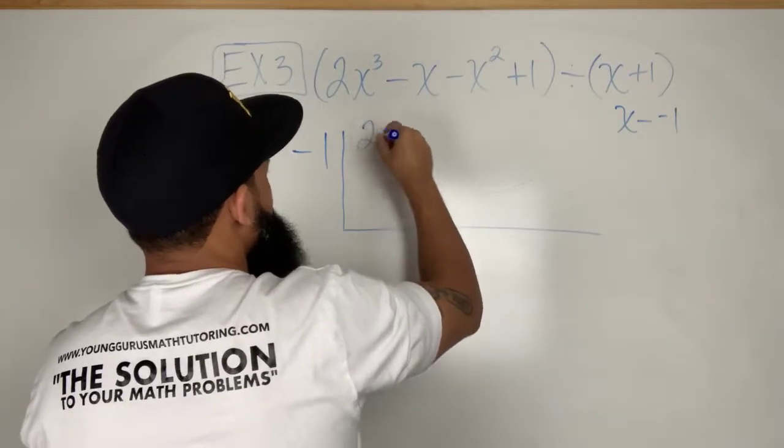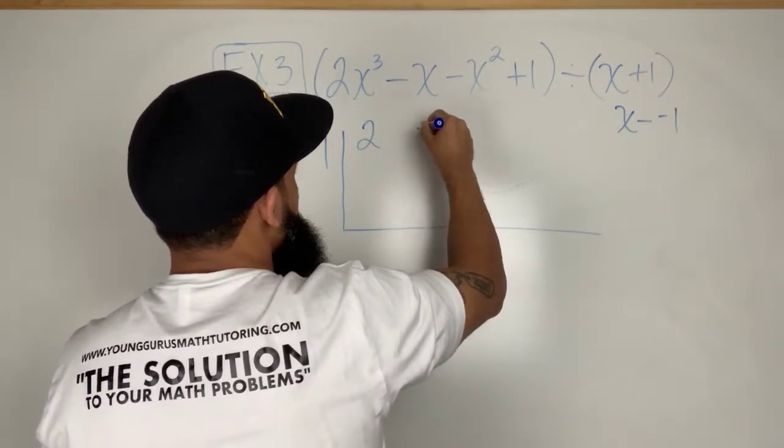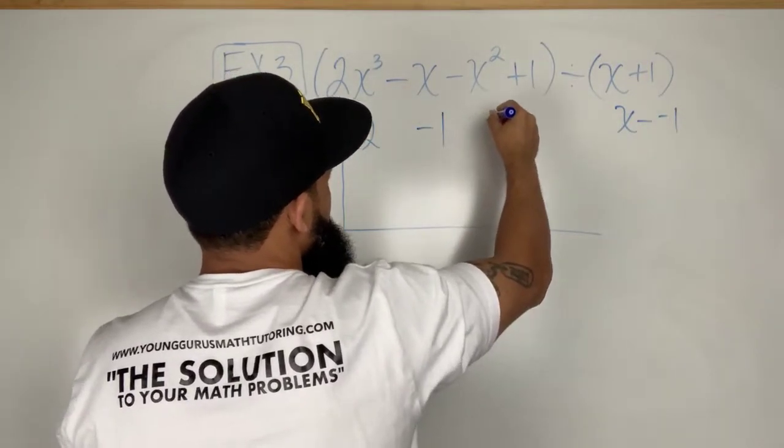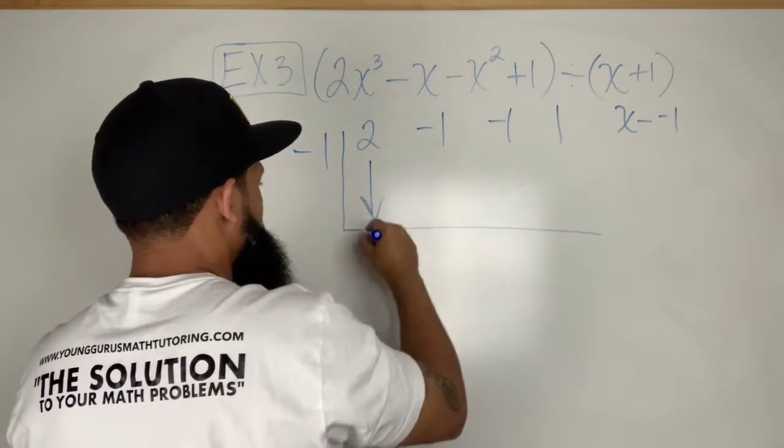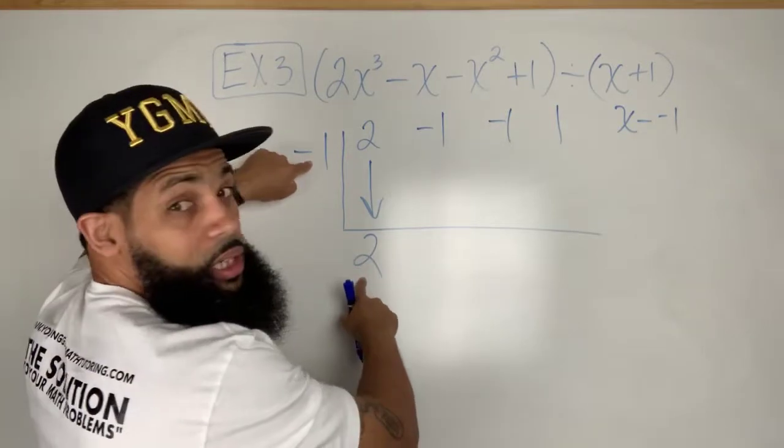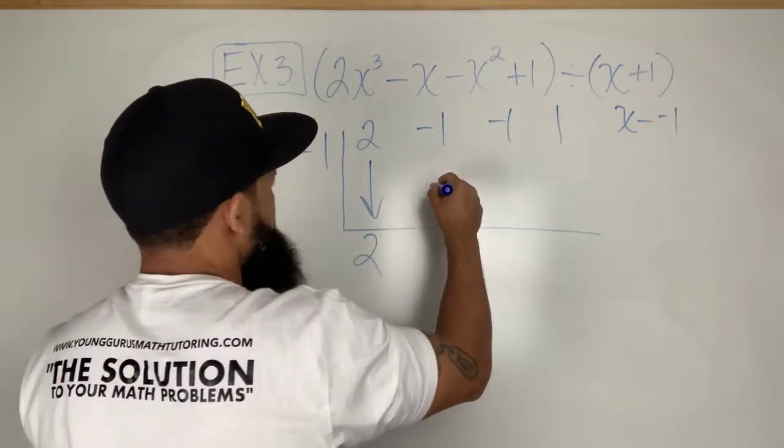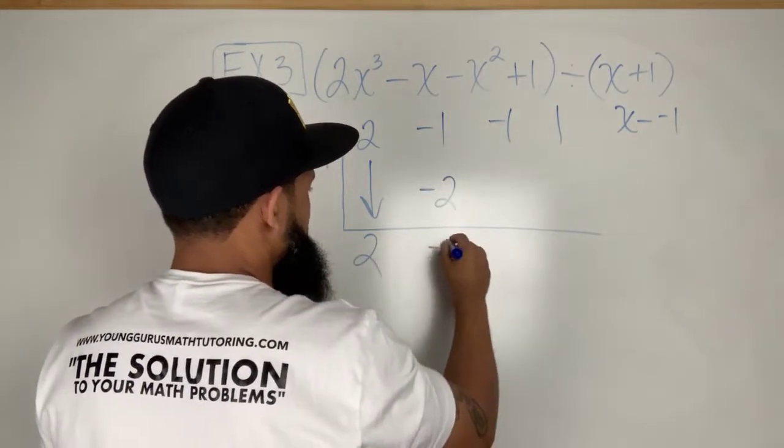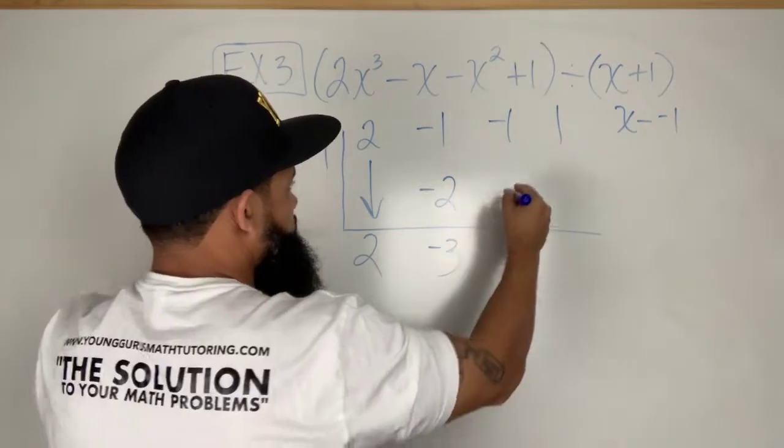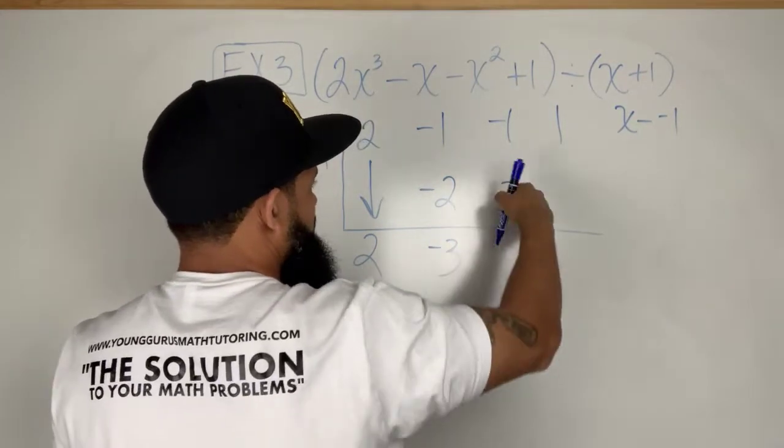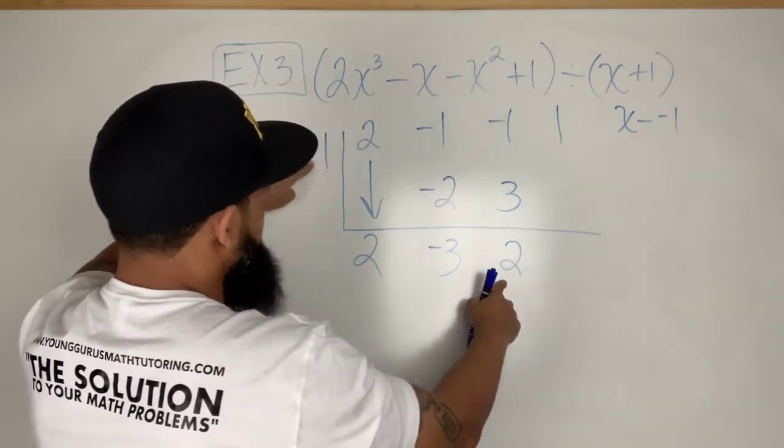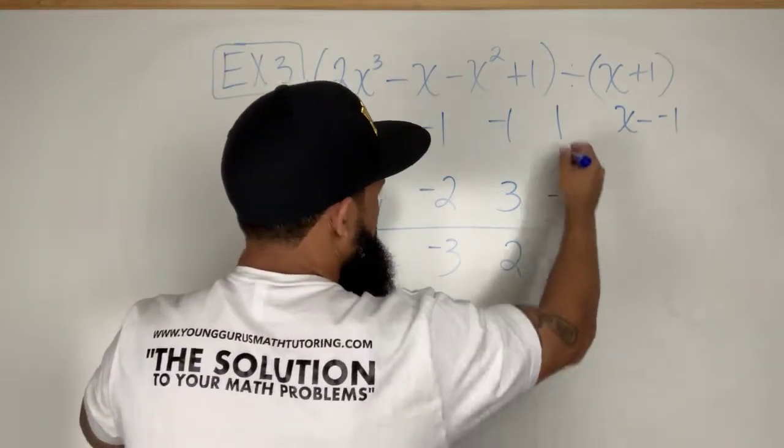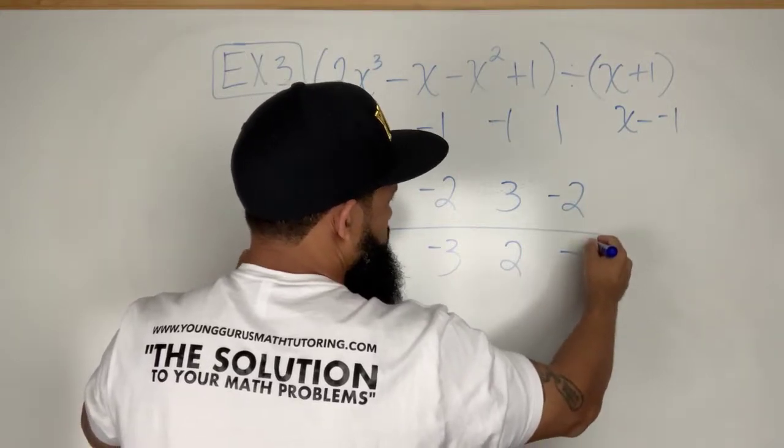Now I'm going to put the coefficient of x cubed, the coefficient of x squared, the coefficient of x, and then that constant. Bring down the 2. Negative 1 times 2 is going to be negative 2. Add these, I get negative 3. Multiply negative 1 times the negative 3, I get positive 3. Add these, I get 2. Multiply again, negative 2. I add these, I get negative 1.